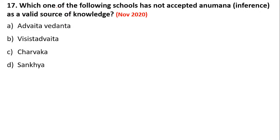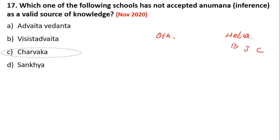Which of the following schools has not accepted Anumana as a valid source of knowledge? There are heterodox schools which don't believe in the Vedas — these include Buddhism, Jainism, and Charvaka. In the Orthodox schools, you have Nyaya and Vaisheshika. Among the heterodox schools, Charvaka does not accept Anumana.